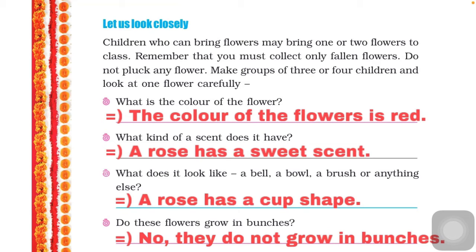The third question is: what does it look like — a bell, a ball, a brush, or anything else? Whatever shape your flower has, you have to write that shape. For example, a rose has a cup shape, so I am writing cup shape.